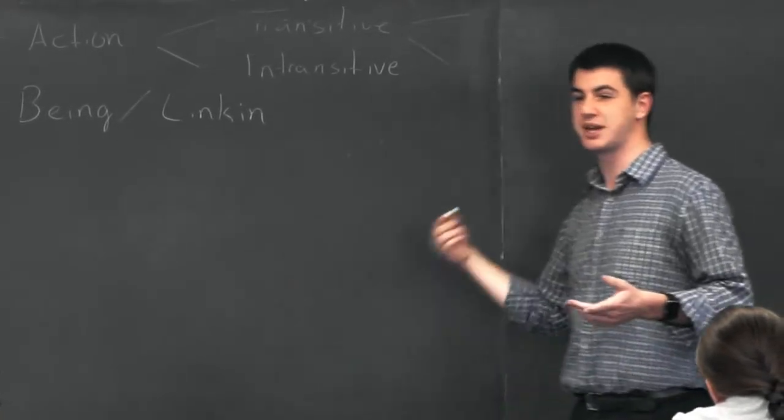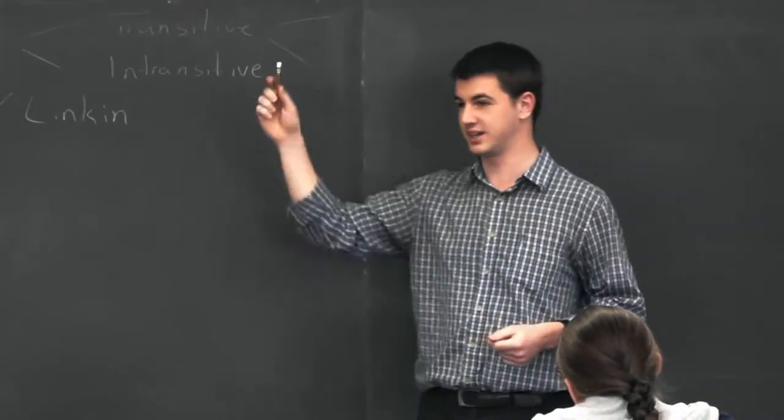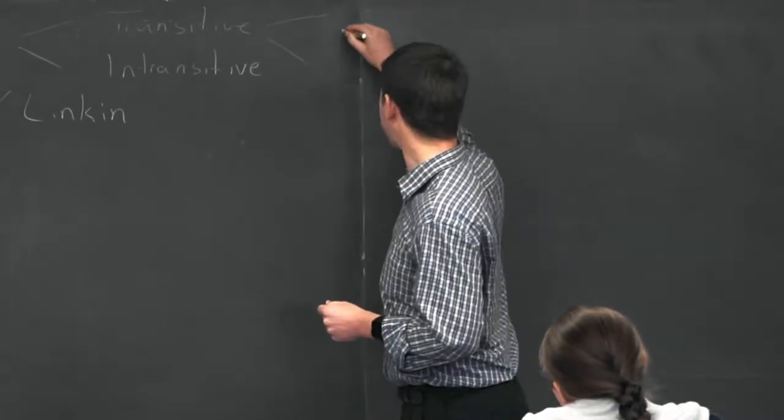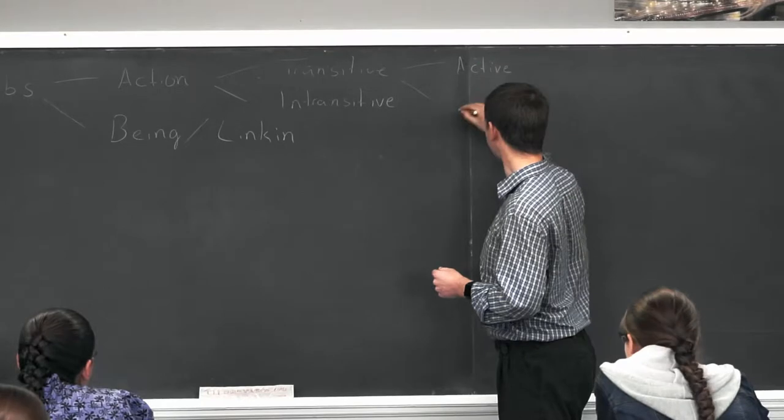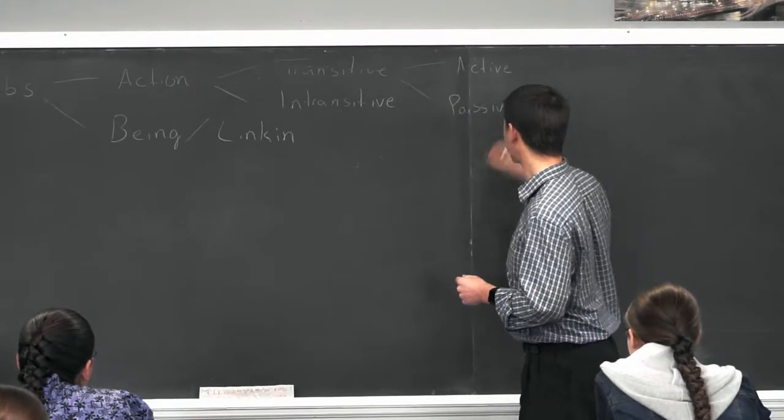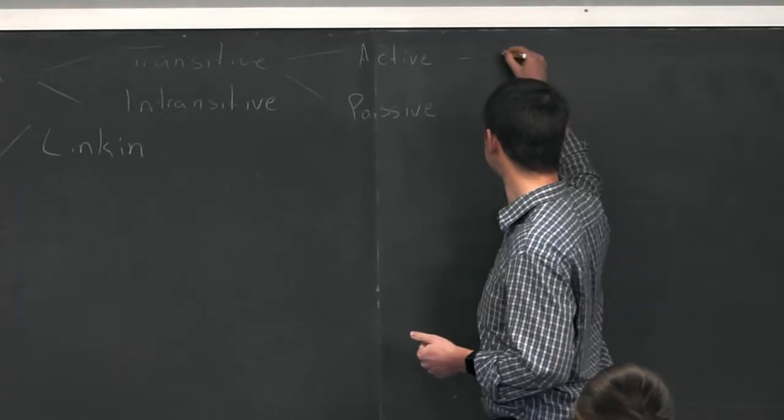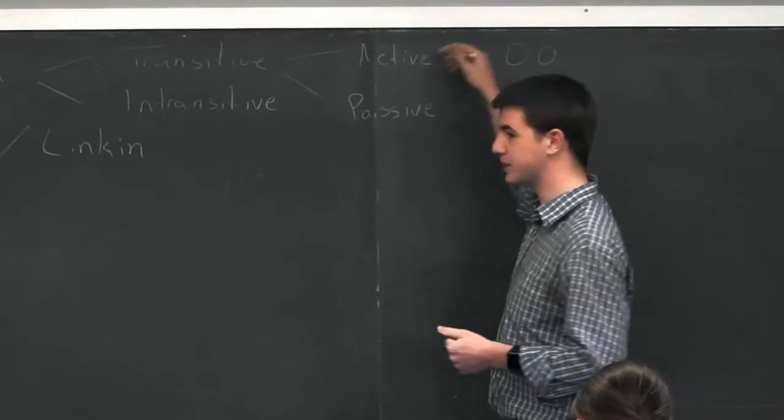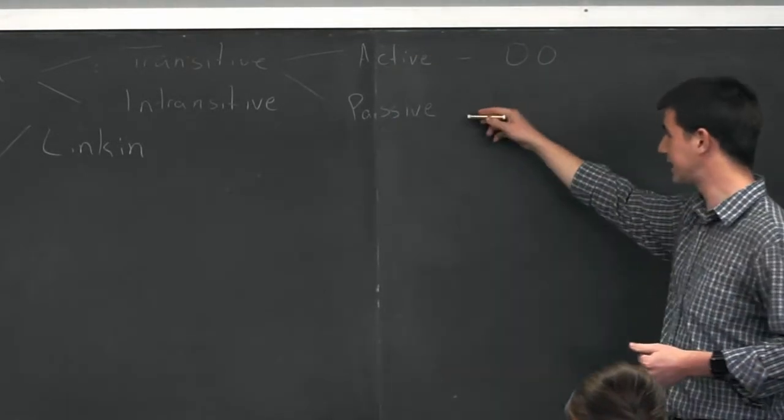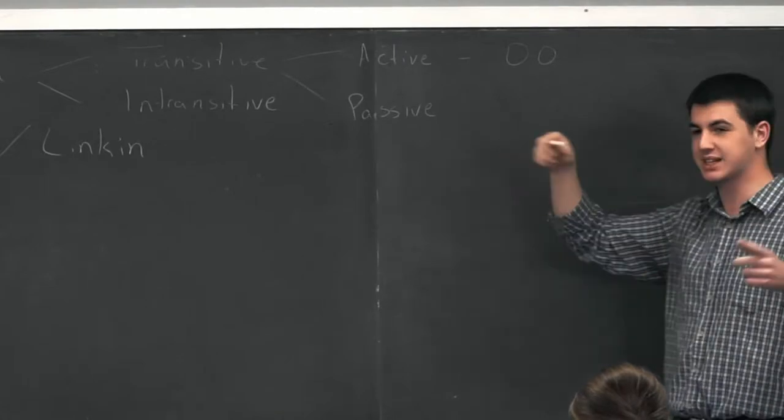So a transitive verb can be either what or what? Yes, active or passive. Okay, so an active voice passes it on to a direct object, which means it will have a direct object. Passive voice passes it back to the subject.